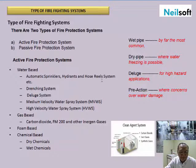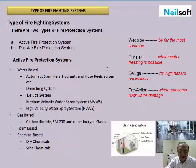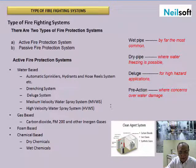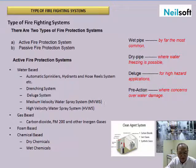Active fire protection systems are categorized as water-based, which includes automatic sprinklers, hydrants, and hose reel systems. Drenching systems are used for cooling surfaces. Deluge systems discharge water from open nozzles for different applications. These firefighting systems are further categorized into medium velocity water spray systems and high velocity water spray systems.